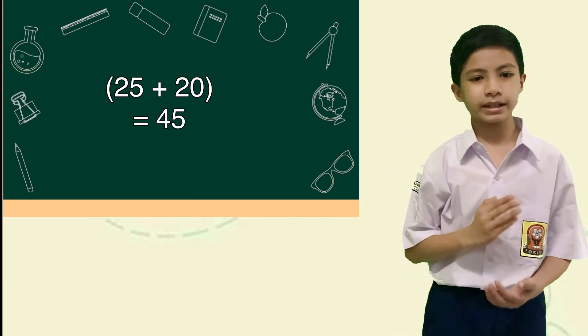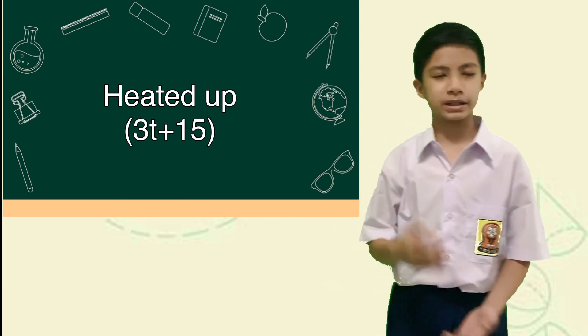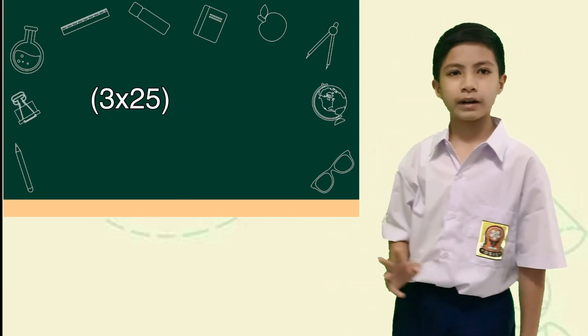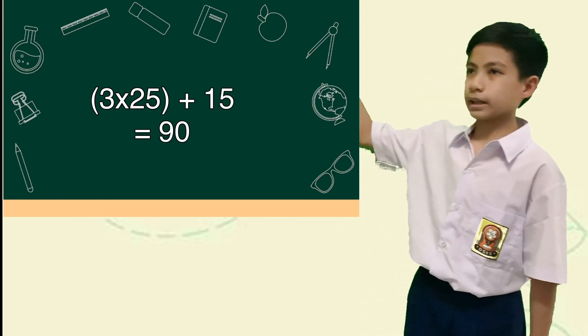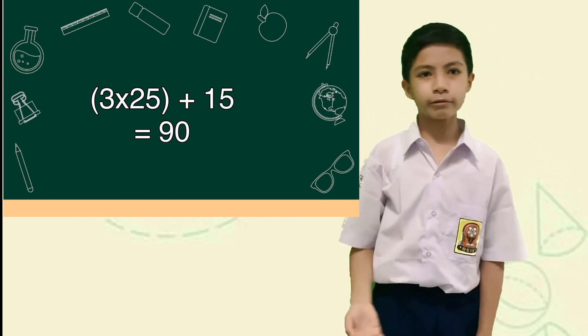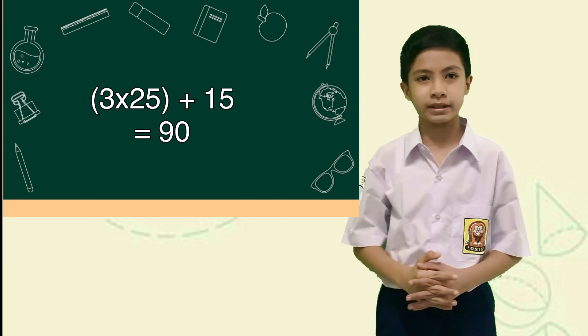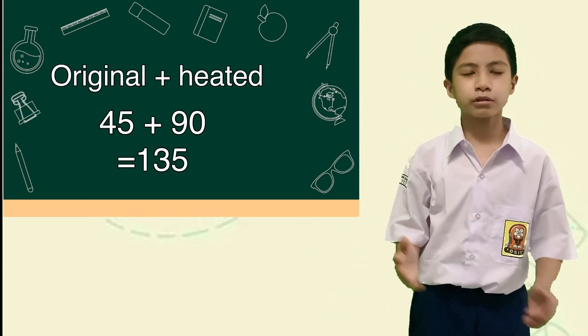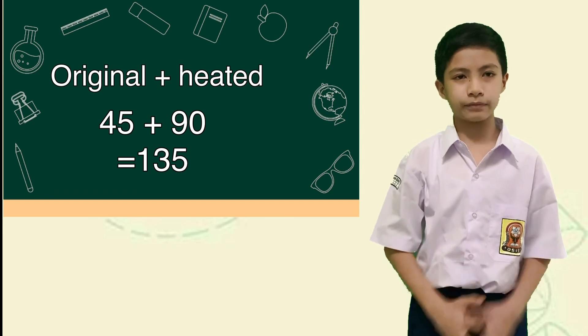And then, it's heated up by 3T plus 15. It means 3 times 25, which is 75, and then add by 15 equals to 90 degrees Celsius. When both numbers are added, it equals to 135 degrees Celsius.